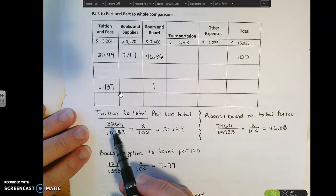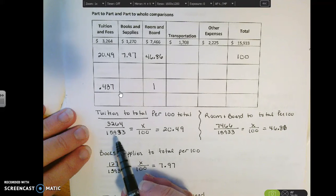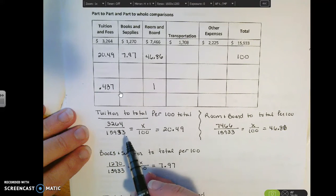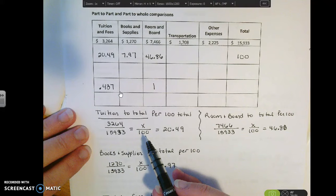So tuition and fees are $3,264 and our total cost is $15,933 and I want to compare this by making the total per 100. So I'm going to set this at a scale of 100.